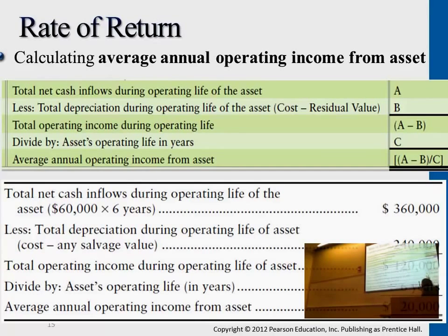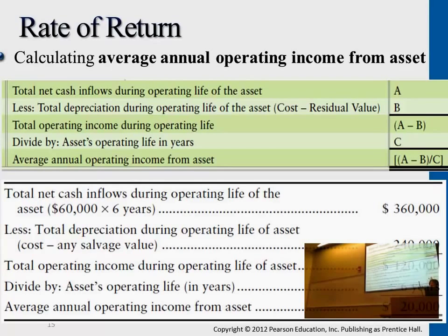Assuming that the depreciation — since the asset depreciates and the salvage value, the residual value, is zero — the total depreciation at the end of the asset's lifetime is the entire investment made earlier, $240,000. The initial cost of the asset is the total depreciable cost. So overall, the operating income out of this investment is $120,000 after six years. Dividing by six gives an average annual operating income of $20,000.